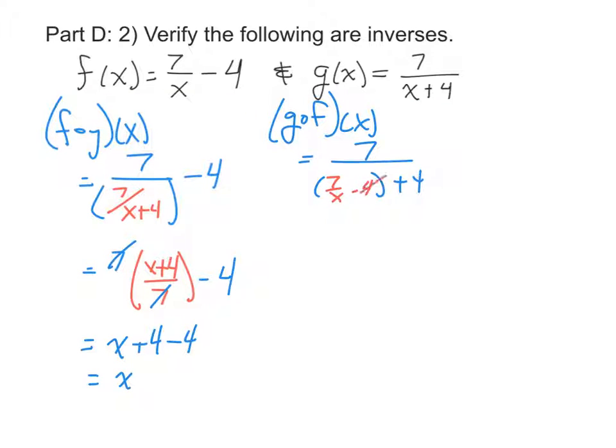Then within the denominator, the two 4's are going to cancel, and we'll have 7 over 7 over x, which of course we have to take the numerator and multiply it by the reciprocal of the denominator. The 7's will cancel, and we're left with x.